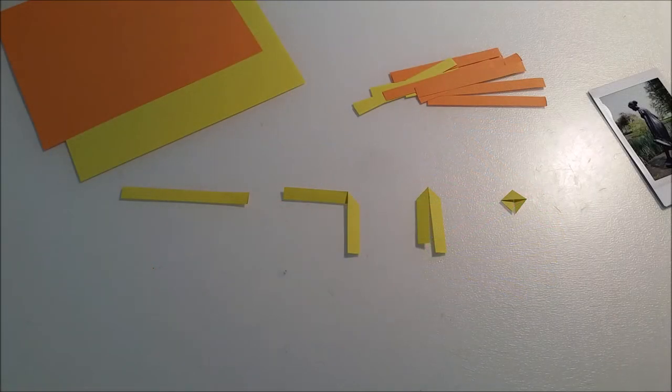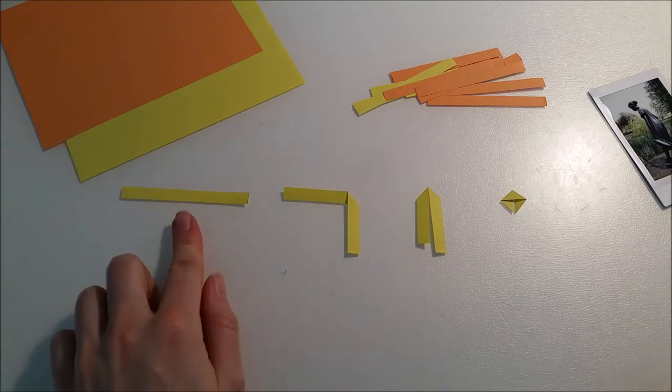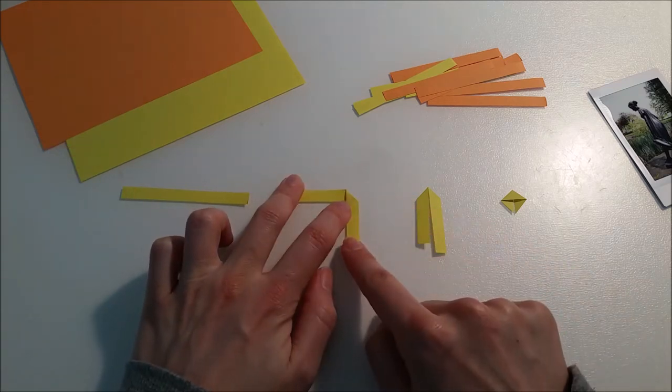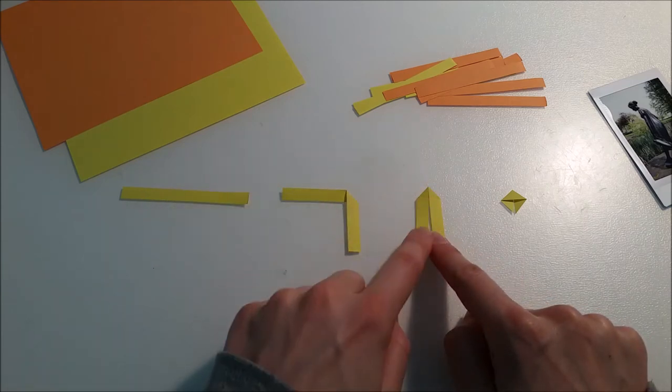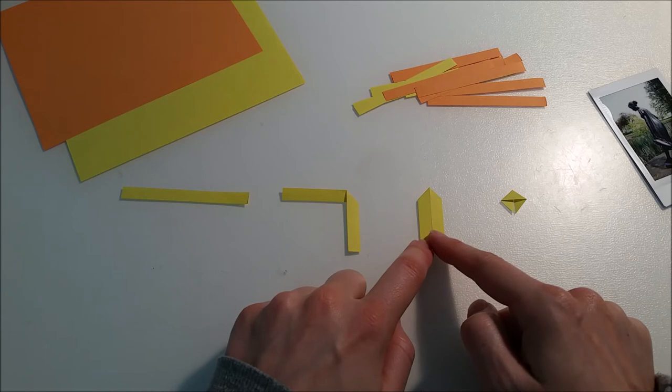So now we have the necessary stripes and now you have to fold them. You take one stripe, fold one end down as shown here at a 90 degree angle, and then you fold the other side down as well at a 90 degree angle.